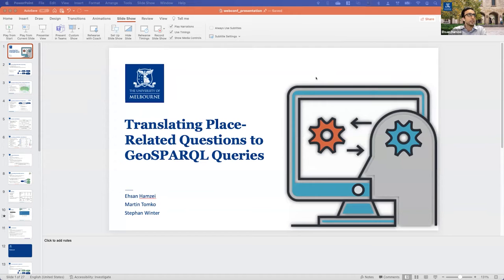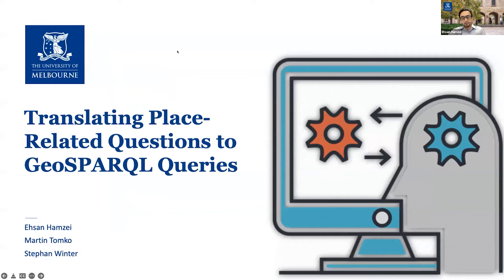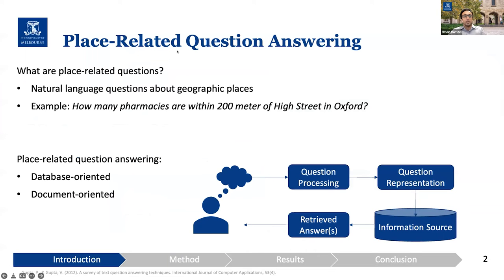My name is Ehsan, and today I will talk about translating place-related questions to geospatial queries. To start, what is a place-related question? It can be simply defined as a natural language question about geographical places, such as the example here: how many pharmacies are within 200 meters of High Street in our export?